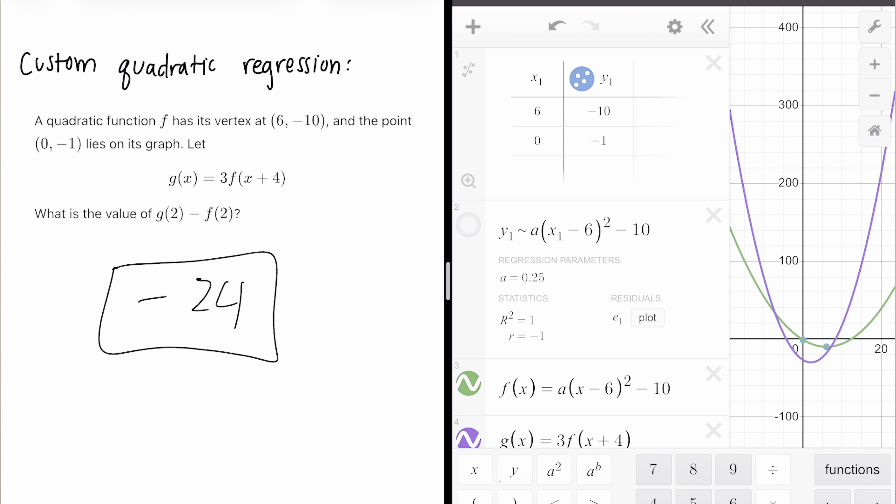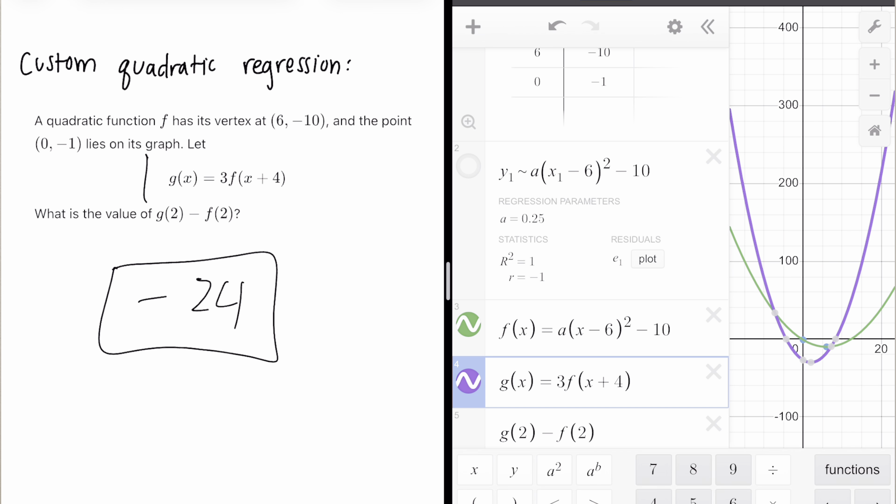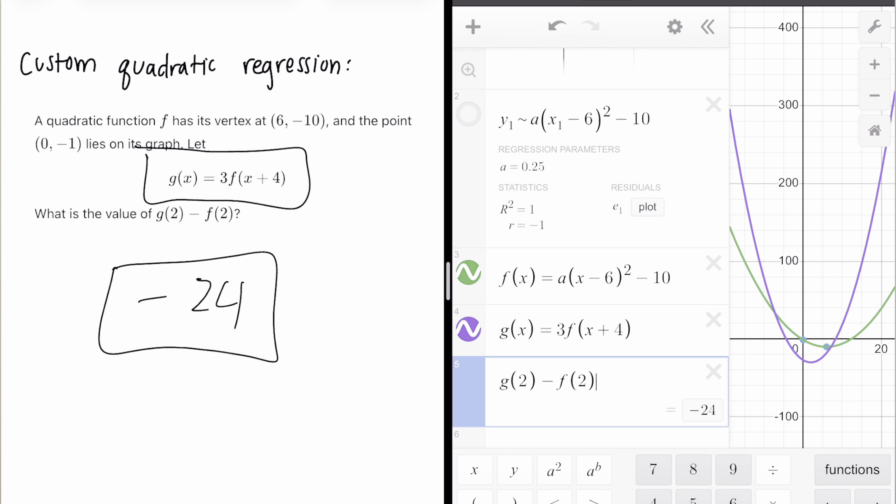Again, let's recap real fast on what we just did. So we just created a table with the two points that we were given. And since we want (6, -10) as the vertex, we did a custom regression using vertex form where we plugged in 6 and -10. So then we wrote out F(X). We wrote out G(X) because G(X) is already defined for us in terms of F(X). And then we did G(2) minus F(2) to get -24.